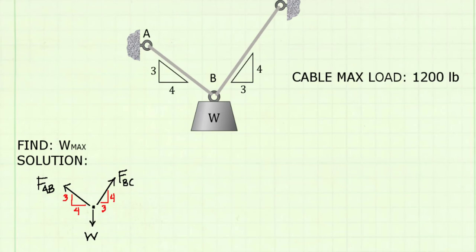Since the cables are oriented at different angles, they will not both feel the same force when we apply the weight. One of them is going to reach 1,200 pounds first. And if you can guess which one that is, go ahead and set it equal to 1,200 pounds and then solve. If you're not sure which one it is, I've got another method for you.